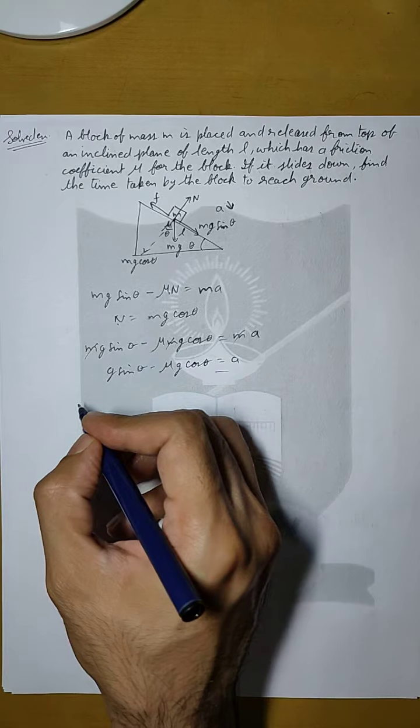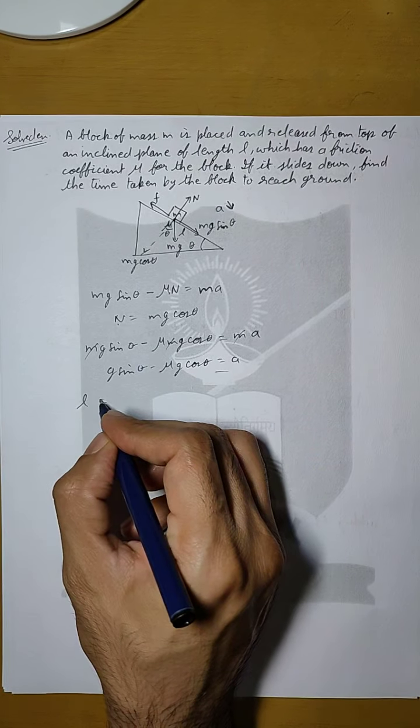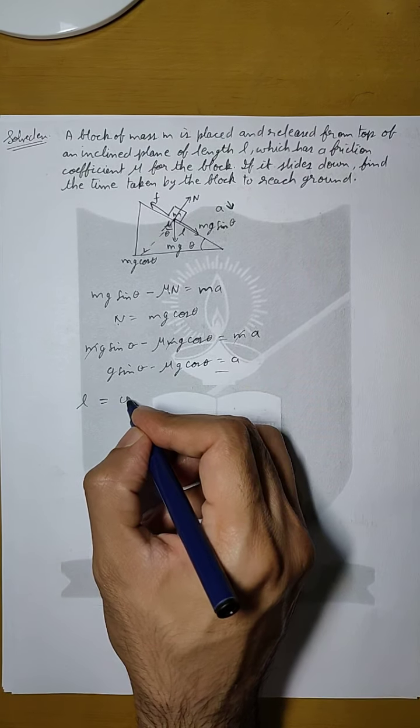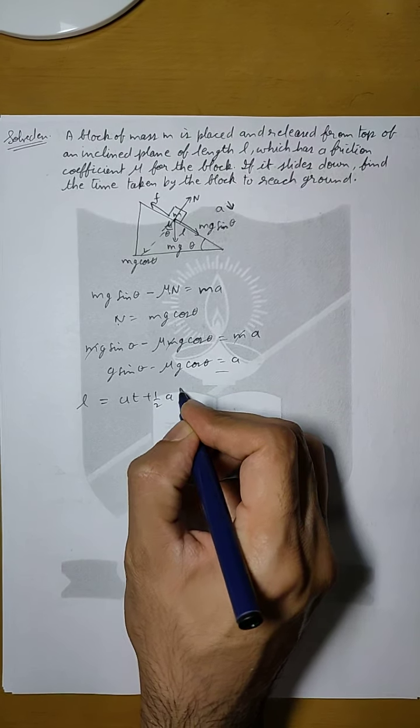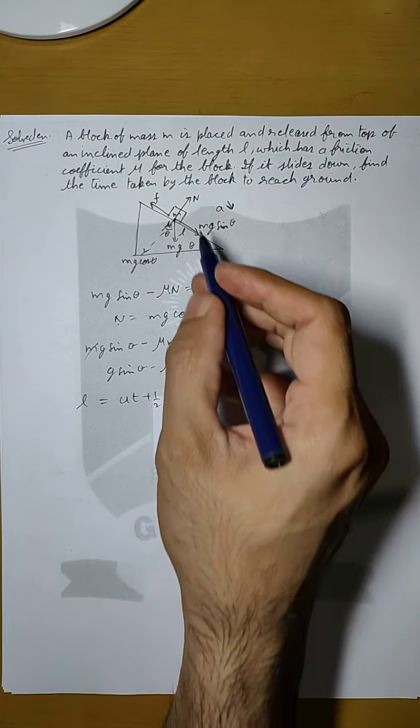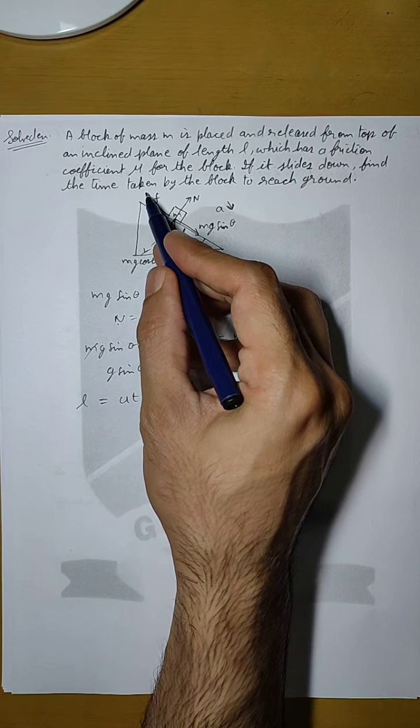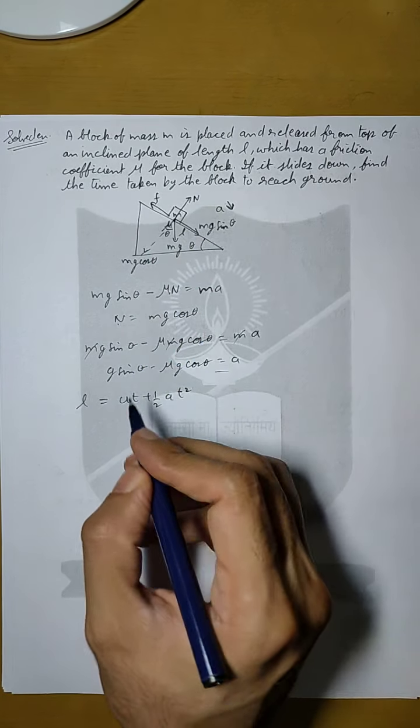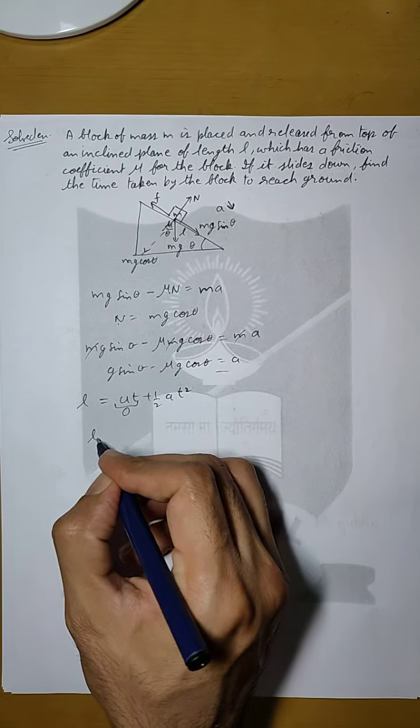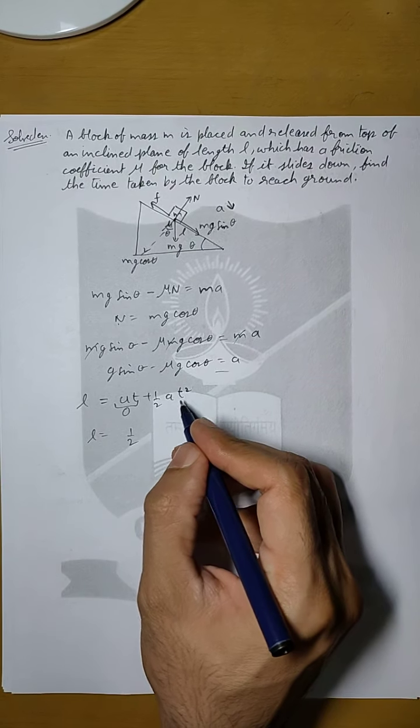The length that is travelled by the block is L and if we use second equation of motion L will be equals to ut plus half A t square. Since it is released from top of the inclined plane so we can say that it is released from rest. So this term becomes 0 and L is half A t square.